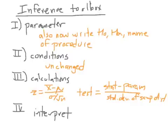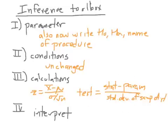The inference toolbox has the same four steps as for confidence intervals. Step one: write down the unknown parameter, your H₀ and your Hₐ, and eventually we'll also name the procedure. Step two: conditions — totally unchanged from before. Step three: calculations — use the formula to calculate a test statistic, then use that z-score or test statistic to calculate a p-value. Finding the p-value is the answer to step three. Step four is interpret.